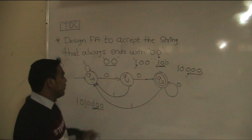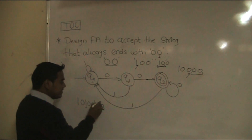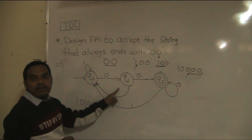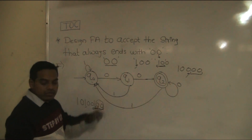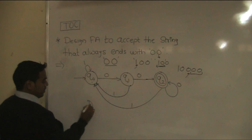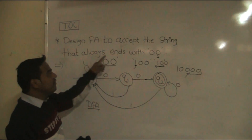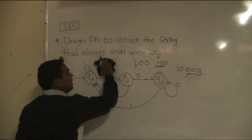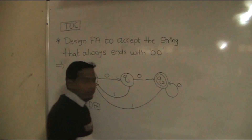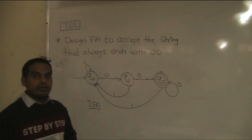So with the help of this, we can provide any string consisting of end symbols 00. This is accepted by this particular finite automata. So this is the final DFA — the deterministic finite automata — which accepts the string that always ends with 00.